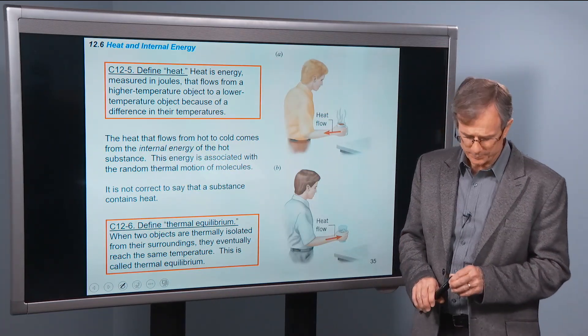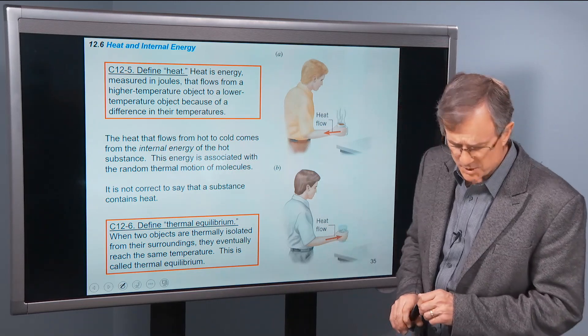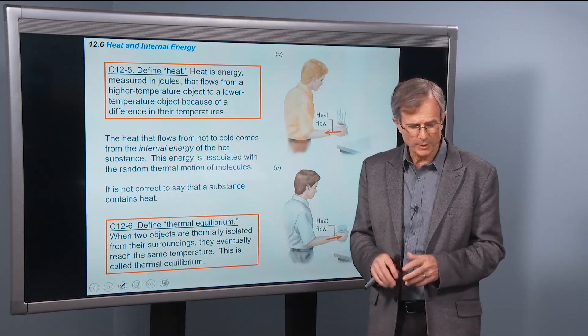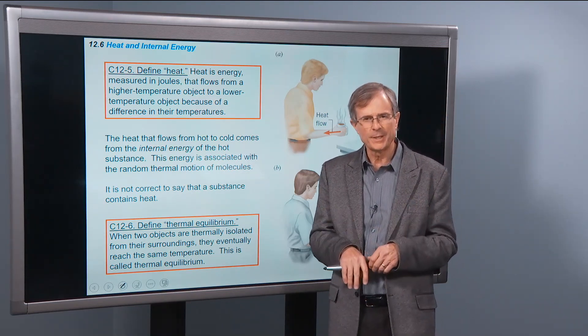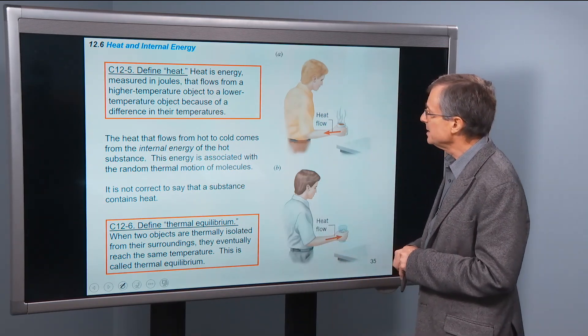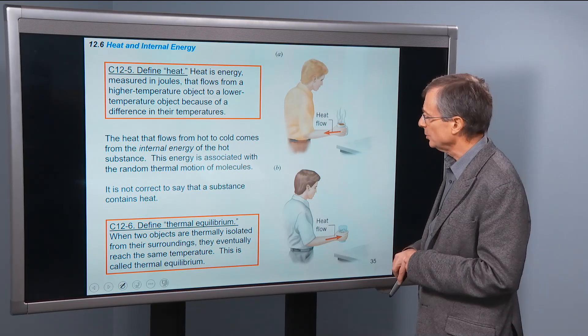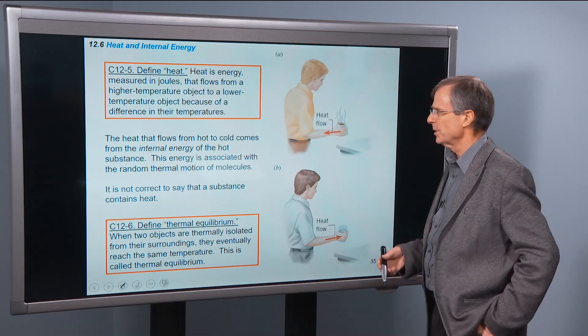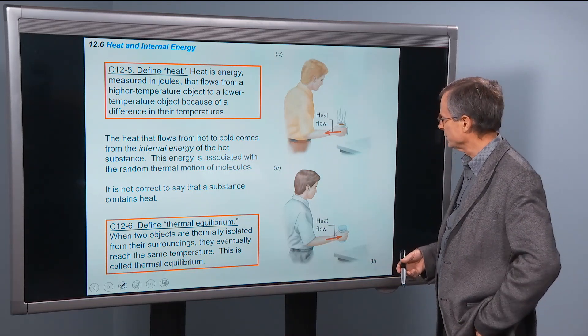Define heat. So the word heat is used in a lot of different ways in colloquial usage, but we'll define it in a very specific way. Heat is energy, measured in joules, that flows from the higher temperature object to a lower temperature object because of a difference in their temperatures.